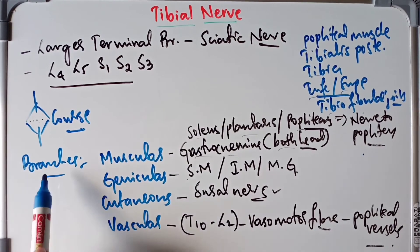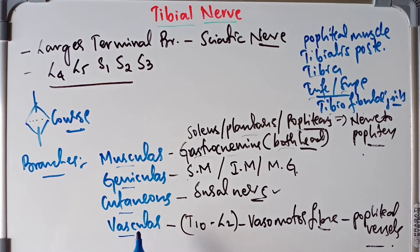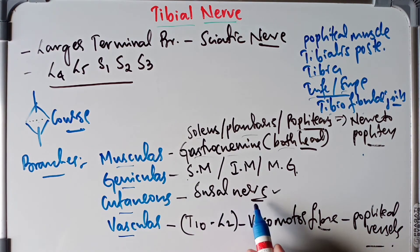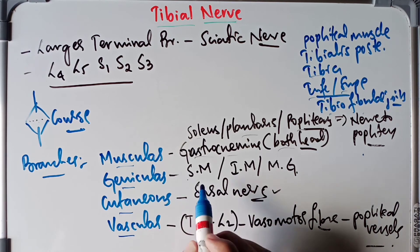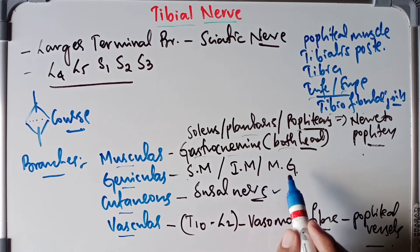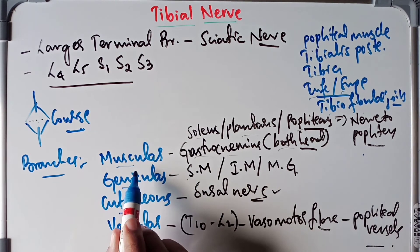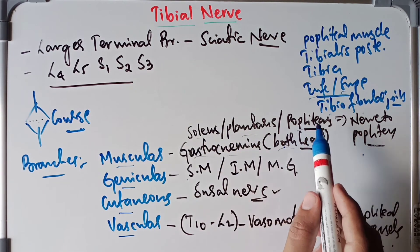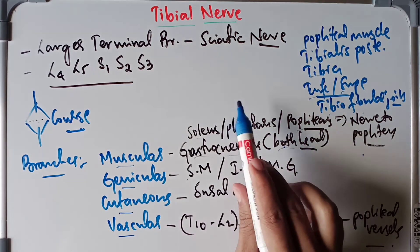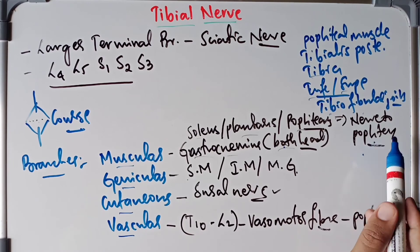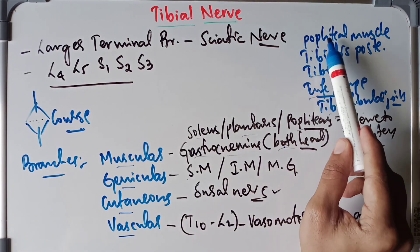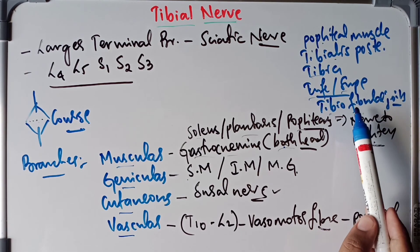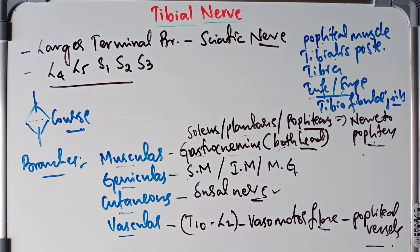So to summarize, the branches of the tibial nerve include muscular, genicular, cutaneous, and vascular branches. The vascular branches supply vasomotor fibers from T10 to L2 to the popliteal vessels. The cutaneous branch is the sural nerve. The genicular branches are the superior medial, inferior medial, and middle genicular nerves. The muscular branches supply gastrocnemius both heads, soleus, plantaris, and popliteus. Through the nerve to popliteus, it also supplies the popliteus muscle, tibialis posterior, tibia, and the inferior and superior tibiofibular joints. This is the complete anatomy of the tibial nerve.